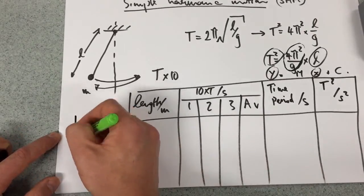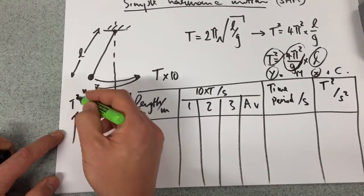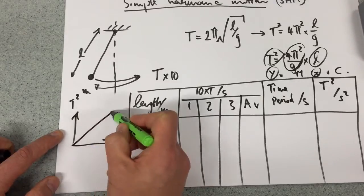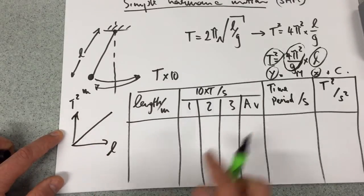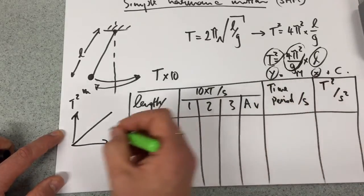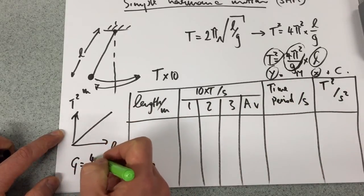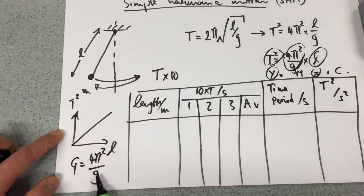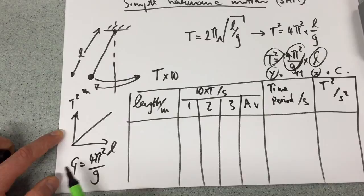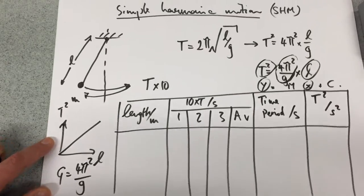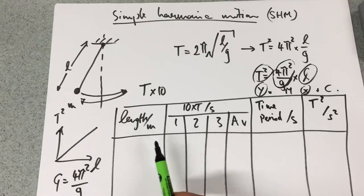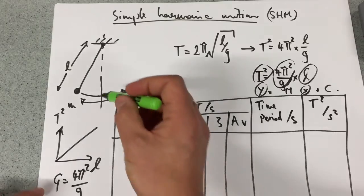Let me just write that down again. If I was to plot T² against L, I should get a straight line through the origin with the gradient equaling 4π²/G. And I could actually work out G by taking 4π² divided by my gradient. So quite a simple idea.